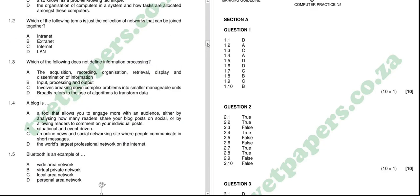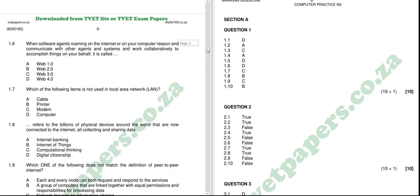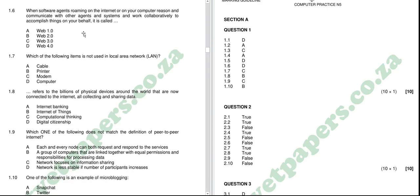Number five: 'Bluetooth is an example of...' — it is D, and the correct response is an example of personal area network. Number six: software agents are roaming on the internet or on your computer, communicating with other agents and systems, and working collaboratively to accomplish things on your behalf — this is called D, web 4.0. We have a continuation in terms of the questions and the expected responses.